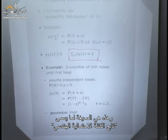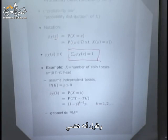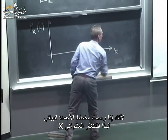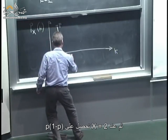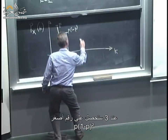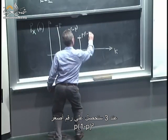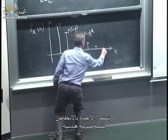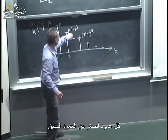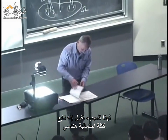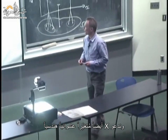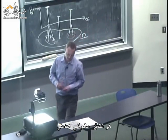We call it geometric because if you plot the bar graph, we start at 1 with value p, then at 2 we get p times (1-p), at 3 we get p times (1-p) squared, and the bars keep going down at the rate of a geometric progression. Each bar is smaller than the previous by a factor of (1-p). So X is a geometric random variable — the number of coin tosses until the first head.